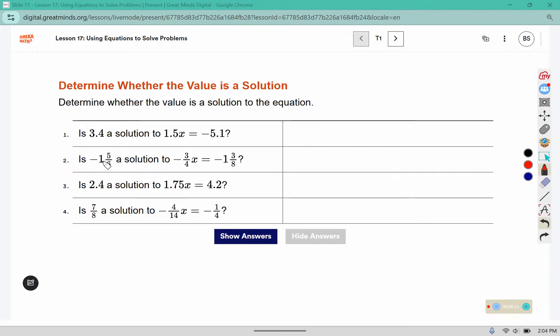So negative 1 and 5/6, 1 times 6 is 6 plus 5 more makes 11/6 and we're plugging that into the x position. You see if that is equal to negative 1 and 3/8, well that would be 1 times 8 is 8, plus 3 more makes 11/8. Negative 3 times negative 11 makes positive 33 and 4 times 6 makes 24. Now 3 does go into both 33 and 24. 3 fits into 33 eleven times and into 24 eight times, but that is not equal to negative 11/8 because a negative times a negative is a positive.